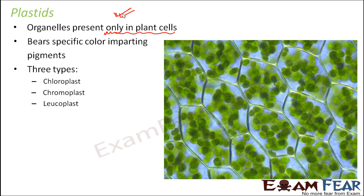There are mainly three types of plastids: chloroplast, chromoplast, and leucoplast. Chloroplast is that which contains the pigment chlorophyll. Chromoplasts are the colored pigments, and leucoplasts are the colorless pigments.